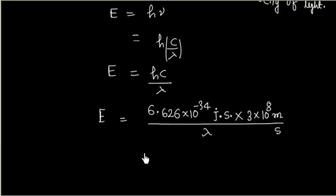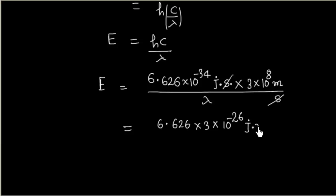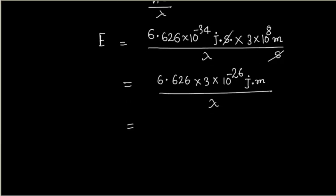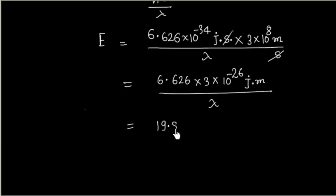Lambda is unknown, so we can write this as 6.626 × 3, and the seconds cancel, giving us Joule·meter. This is 10⁻²⁶ Joule·meter, divided by λ. Calculating 6.626 × 3 gives 19.878 × 10⁻²⁶ Joule·meter, divided by λ.